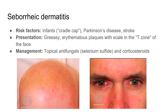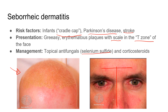Seborrheic dermatitis can be seen in infants as cradle cap. In adults, it can be a sign of systemic disease — associated with Parkinson's disease, stroke, and other systemic conditions. Presentation in adults: greasy erythematous plaque with scale, often in the T-zone of the face and extending to the sides of the nose. Management is topical antifungals — sometimes selenium sulfide and/or corticosteroids.